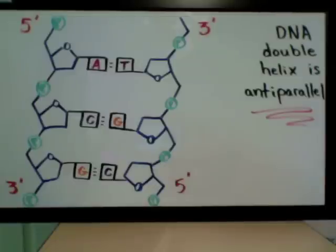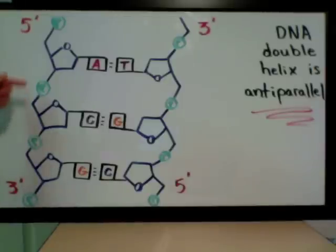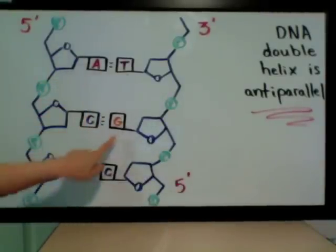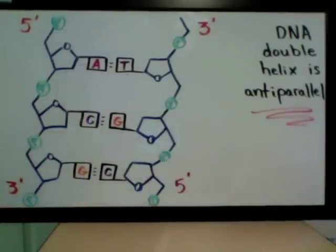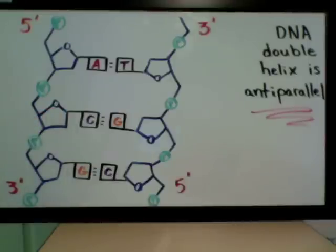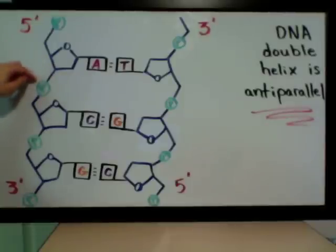DNA is built in a 5' to 3' direction, but what does that mean? The structure of DNA has a sugar-phosphate backbone on each of the two strands, held together by nitrogenous base pairs — all the ATCGs. The carbons on the deoxyribose sugar molecule are numbered 1, 2, 3, 4, and 5. The 5th carbon happens to be outside of the sugar ring, and the 3' carbon of the sugar molecule is connected through a phosphate group to the 5' carbon of the next sugar molecule.